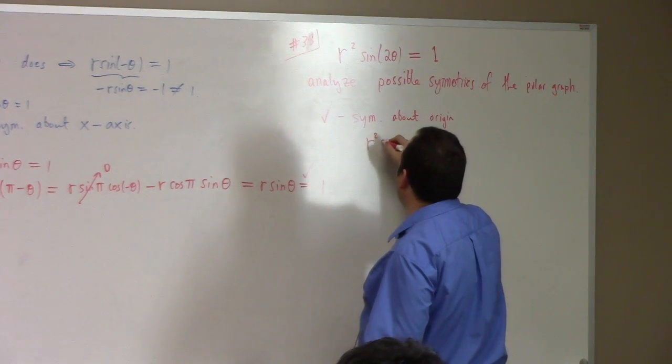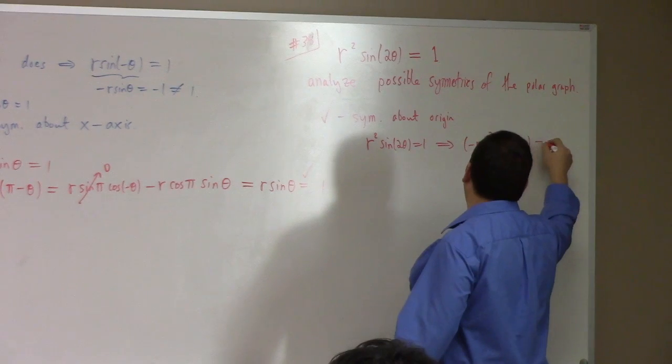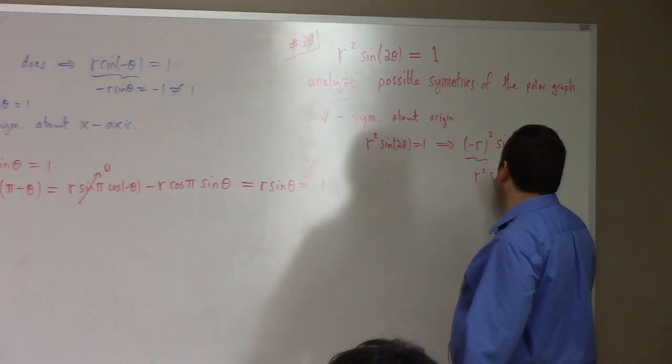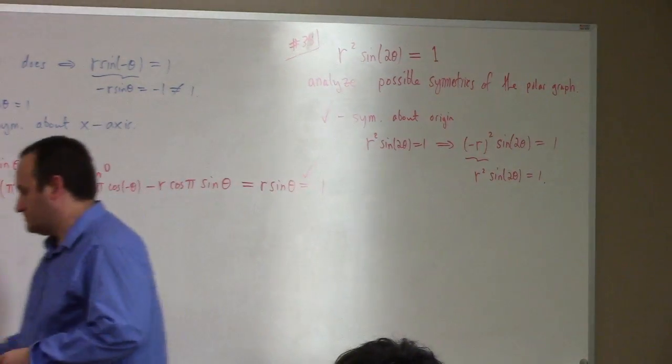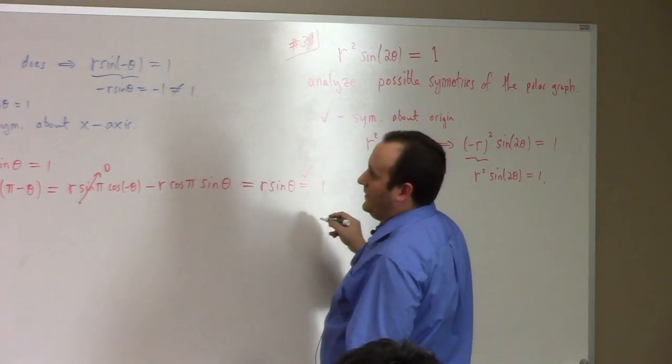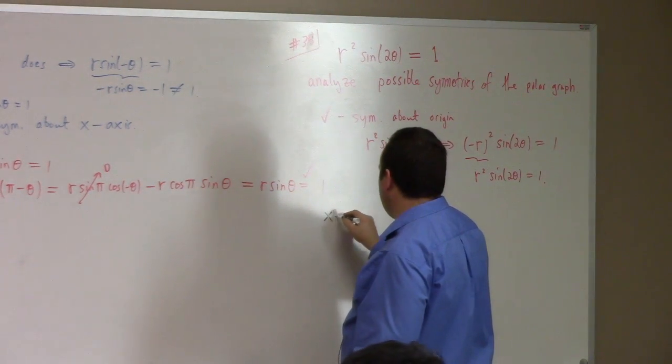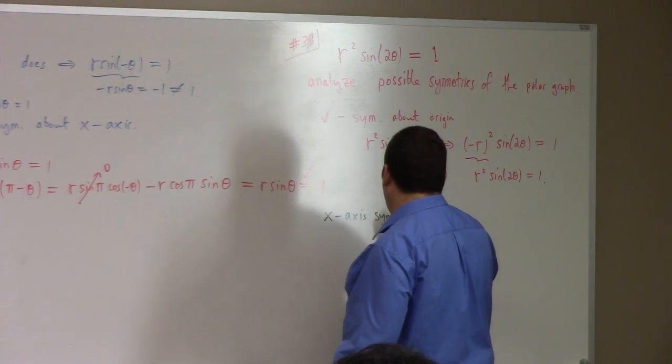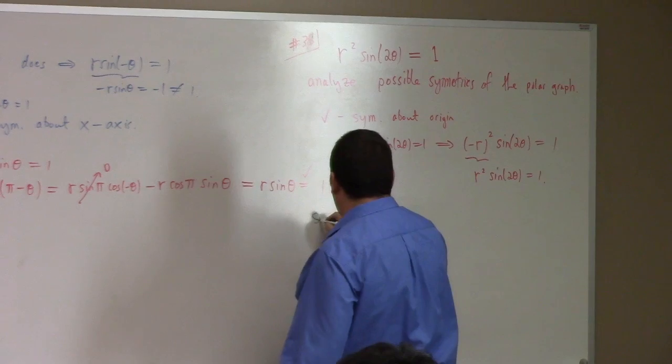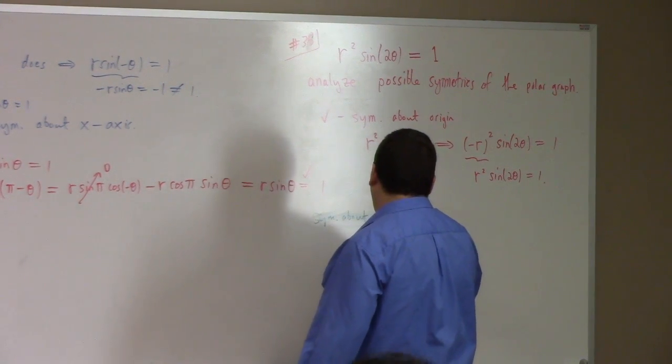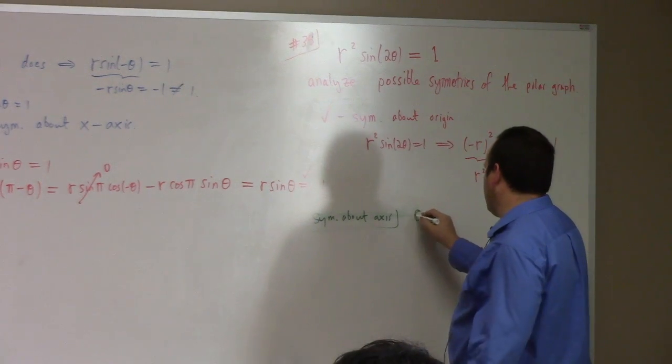So, first of all, it is symmetric about the origin, right? How can I see that? Right. Exactly. If r squared sine two theta is equal to one, that implies that minus r squared sine two theta is also equal to one. Because this, of course, is just r squared. What about the other ones? If you look at, let's see here. let's see, let's check for x-axis symmetry, right? Symmetry about the x-axis. You start writing it like a civilized, ew! Yuck! Symmetry about x-axis. So what are we supposed to do?